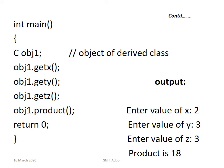Then comes the main function. C is the last derived class, so for class C you create the object OBJ1. With the object OBJ1 and the dot operator, you are calling the member functions of class A and B as well — because C is the derived class inheriting all properties of its parent classes. So OBJ1.getX, OBJ1.getY, and OBJ1.getZ are called, and then OBJ1.product. Then return 0.